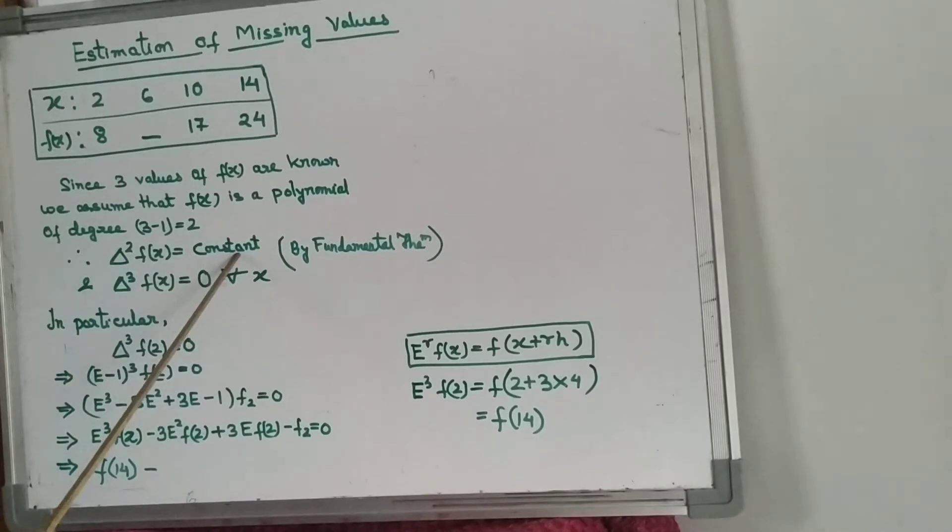Higher order difference will be 0 for all x. That means del cube of f(x) will be 0. In particular, if we take f(x) at x value 2, this first value, then del cube of f(2) is equal to 0 by this theorem.